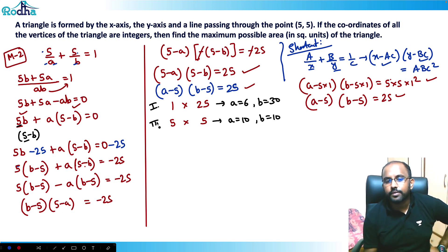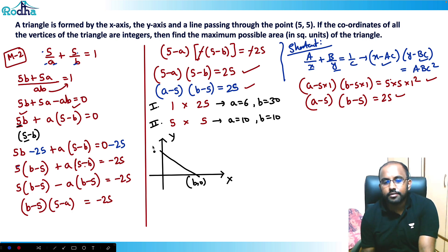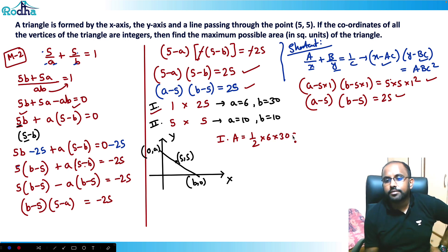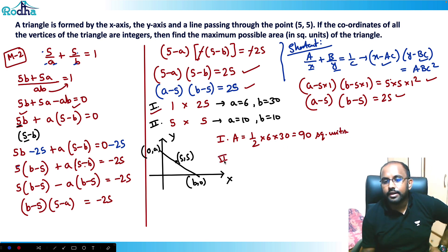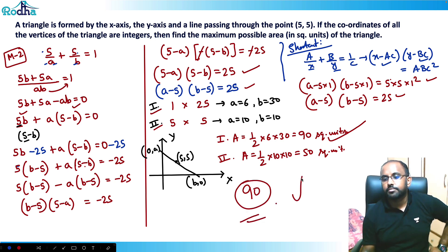The triangle has vertices at the origin, (b, 0) on the x-axis, and (0, a) on the y-axis. Case 1: area = ½ × 6 × 30 = 90 square units. Case 2: area = ½ × 10 × 10 = 50 square units. So the maximum possible area is 90 square units.